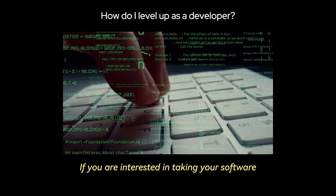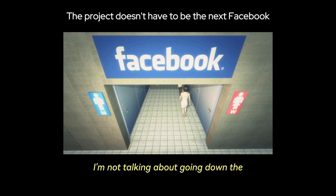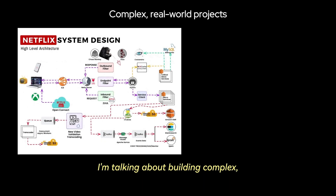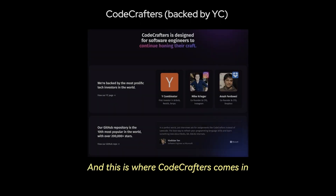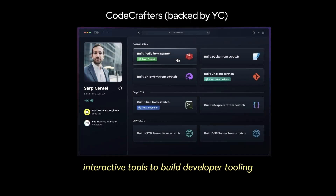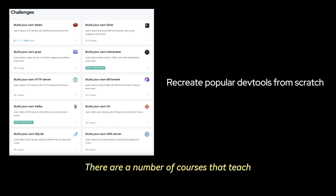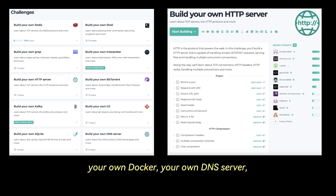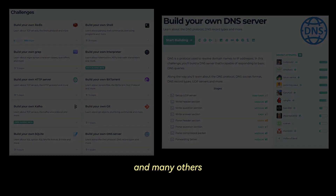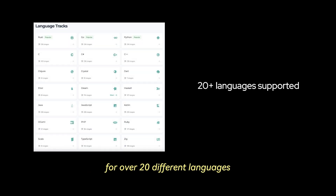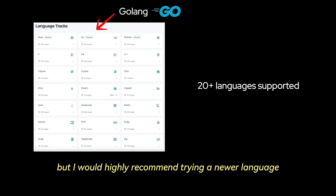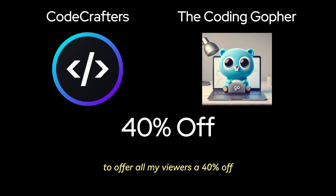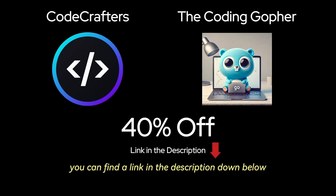If you are interested in taking your software engineering skills to the next level, I would encourage you to build projects — not tutorial hell to-do lists, calculators, or weather apps, but complex real-world projects beyond the basics. This is where CodeCrafters comes in. This platform provides interactive tools to build developer tooling from scratch, with courses covering Git, in-memory Redis, an HTTP web server, Docker, a DNS server, and many others. There's built-in support for over 20 different languages — my favorite is Golang, but I'd highly recommend trying Zig as well. I'm excited to announce I'm partnering with CodeCrafters to offer all my viewers 40% off. Find the link in the description and pinned comment.